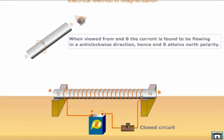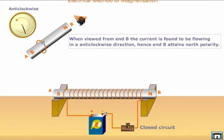If the current appears to be flowing in an anticlockwise direction, then that end attains north polarity.